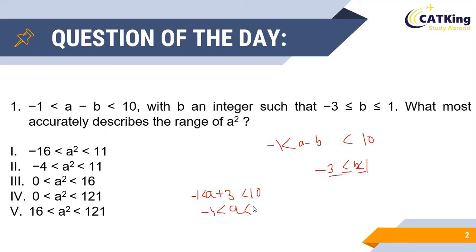Now if we put the maximum value of b in the first inequality, let us check out the range of a as well. Hence when b is equal to 1, we see that the first inequality becomes a minus 1 lies between minus 1 and 10, thus giving us a range of a between 0 and 11.